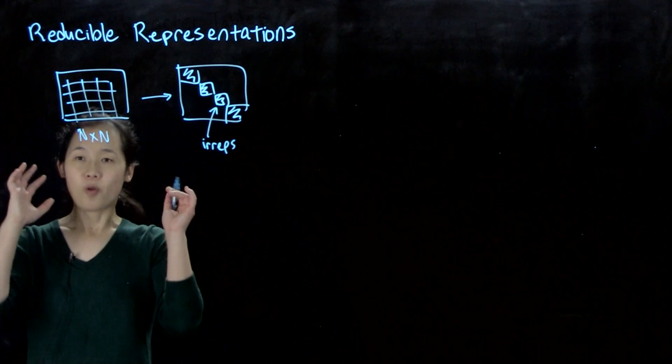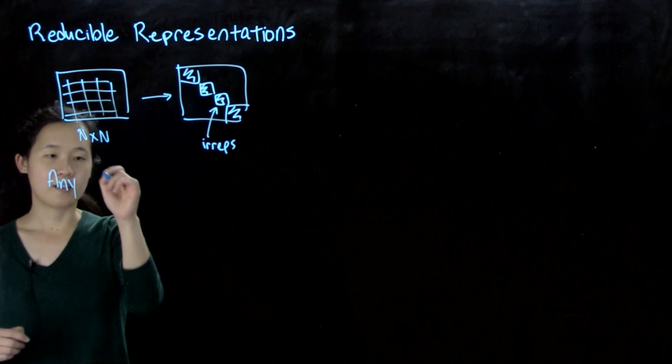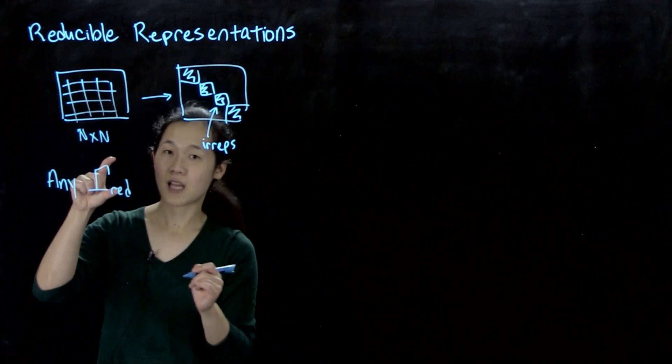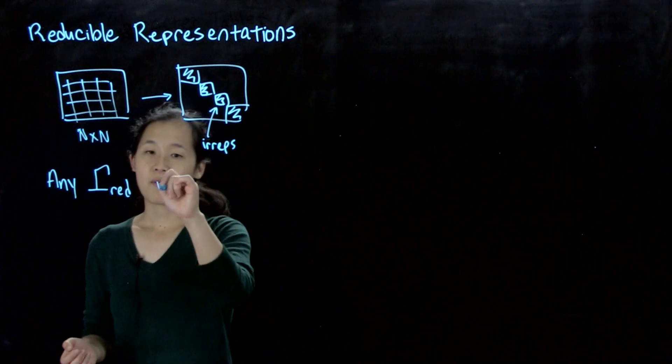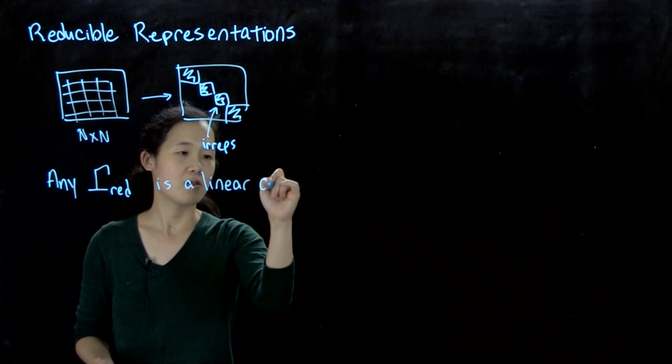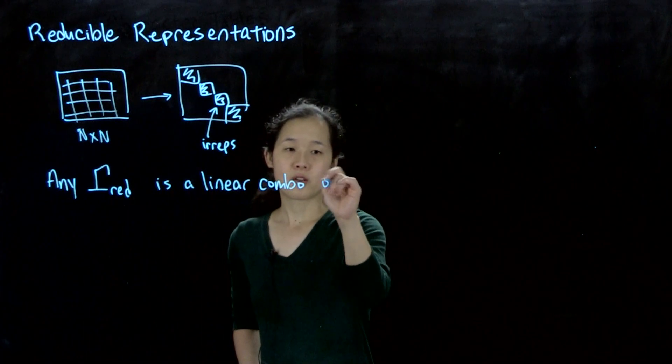I'll give an example, but the point you should have in mind is that any reducible representation, gamma red, is a linear combination of irreps in that point group.